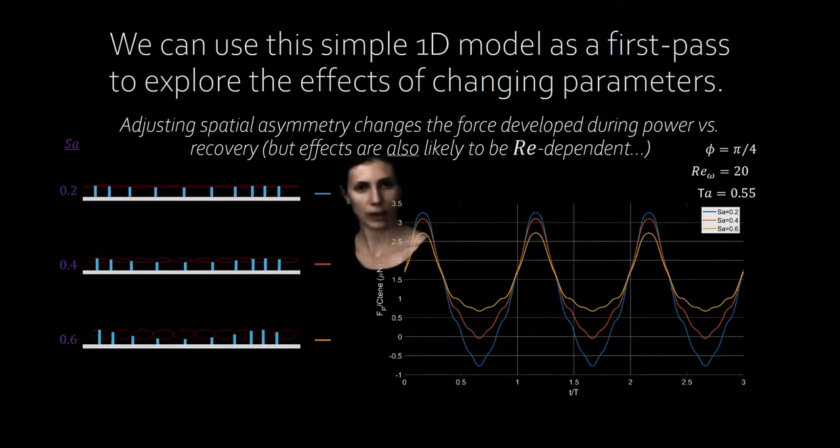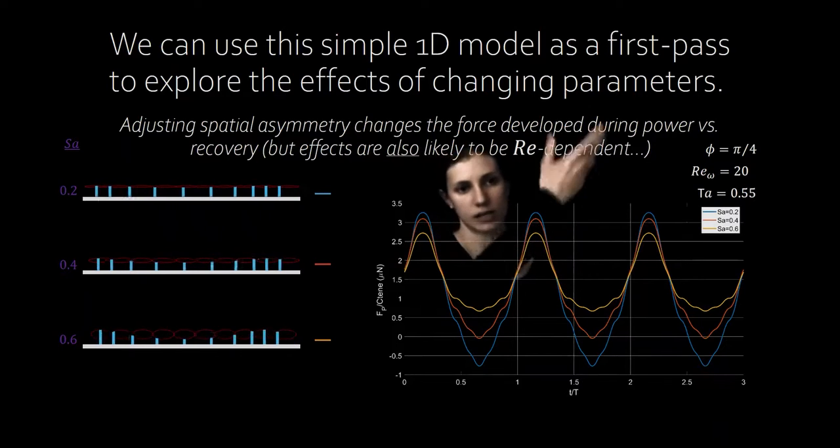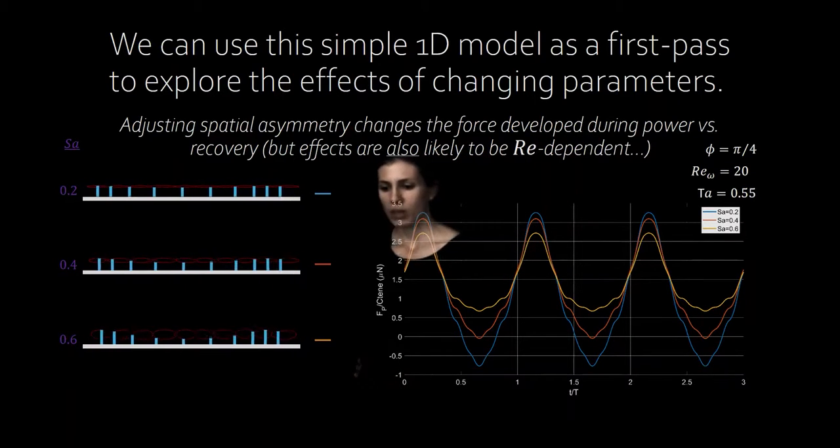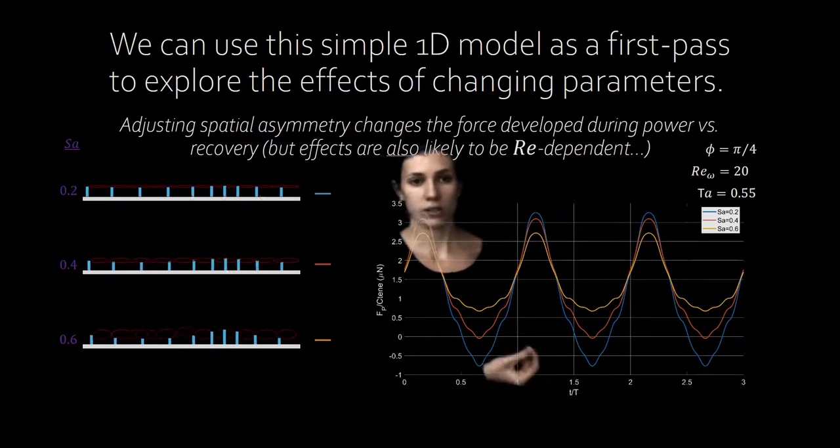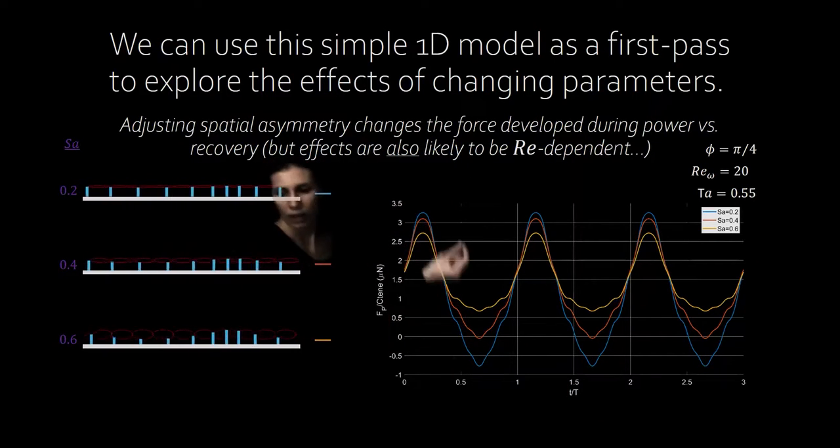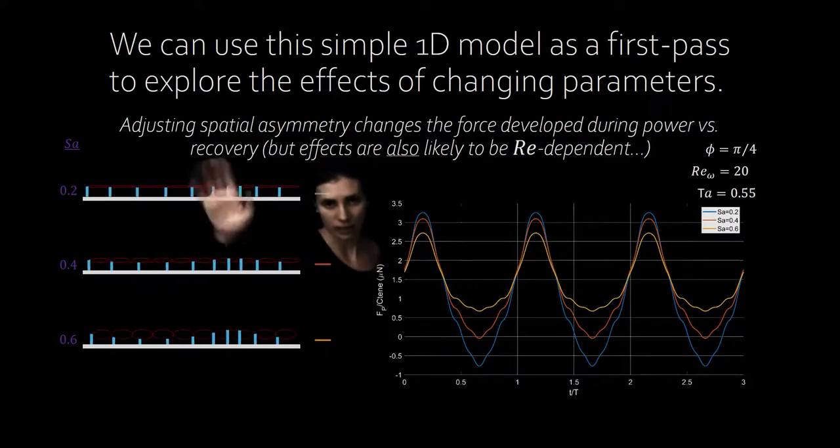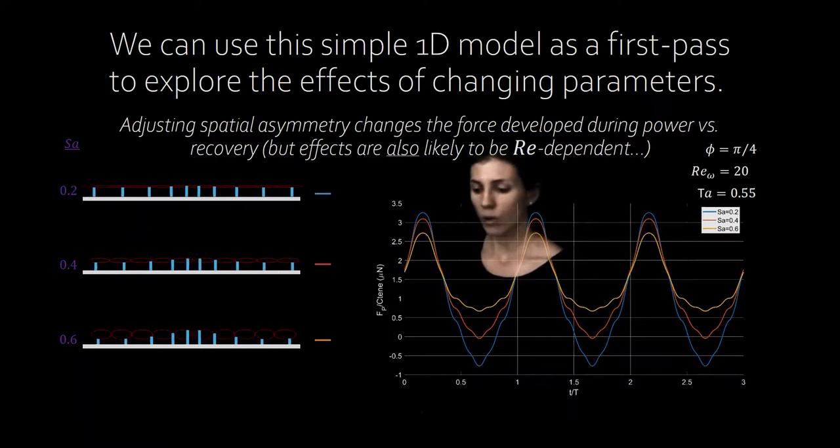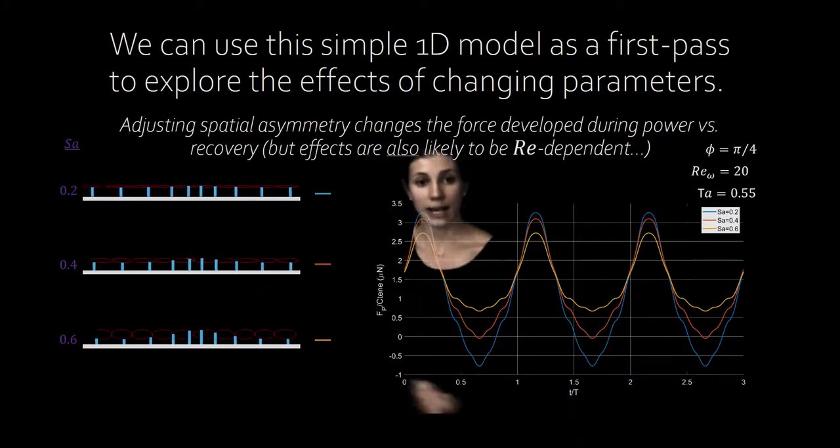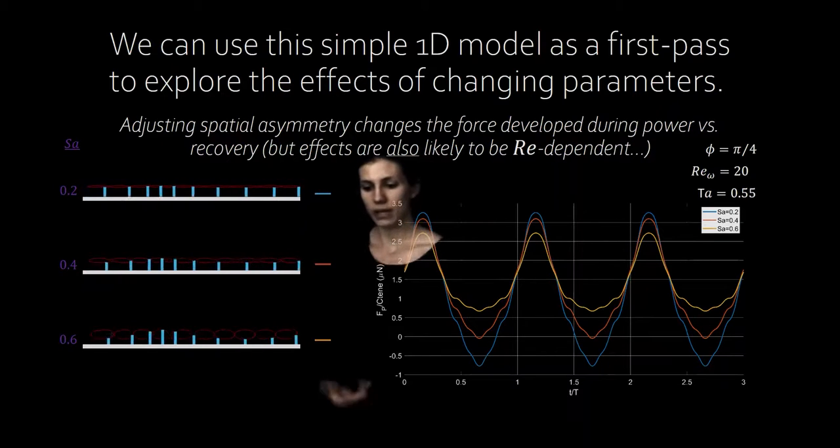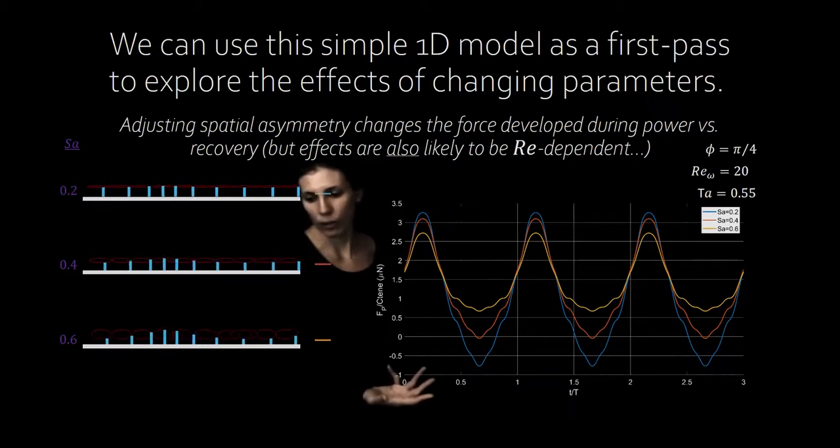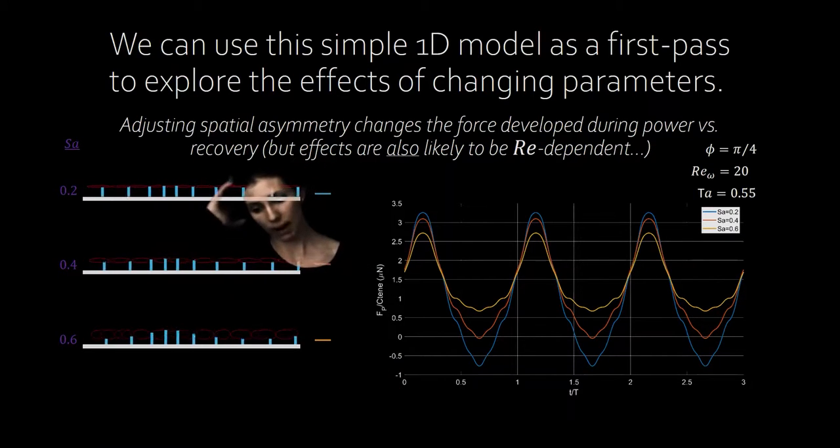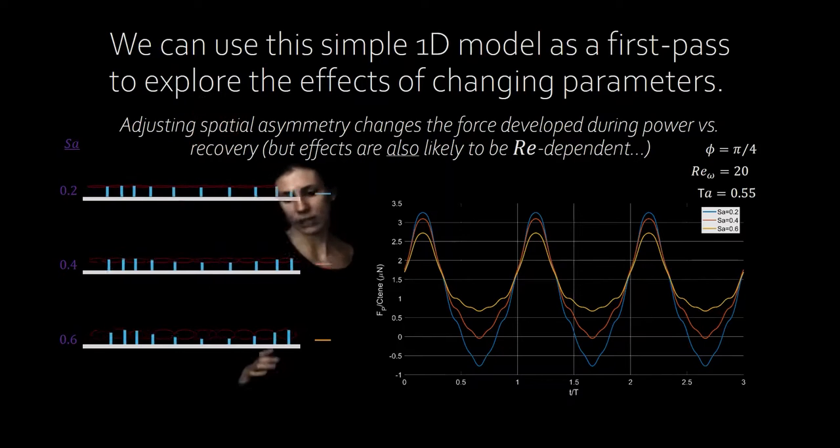Let's take a look what happens when we manipulate SA. Here we've got again a constant Reynolds number, constant phase lag and this time we're holding temporal asymmetry constant. You can see here that because we're holding TA constant the timing of the power of recovery stroke remains constant but there are some differences between the magnitude of the force developed during the power versus the recovery stroke. For the lower SA this kind of inverse thrust from the paddle moving backward during the recovery stroke is producing negative thrust during some portions of the cycle. But as we increase SA the overall force stays above zero at all times. And again this is just for one Reynolds number at a fixed phase lag and a fixed TA.